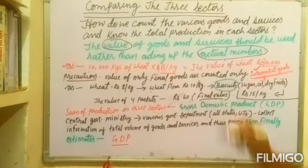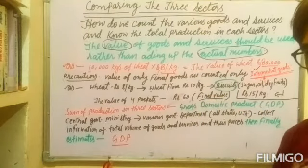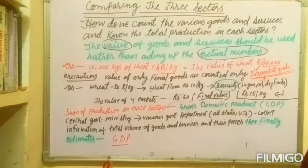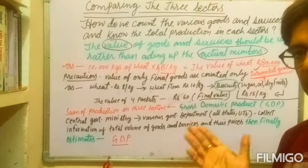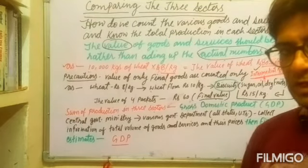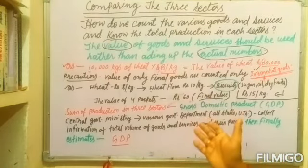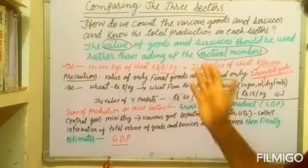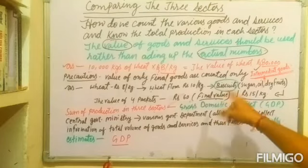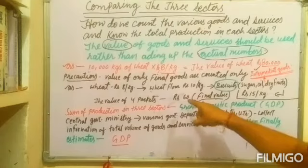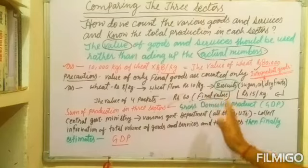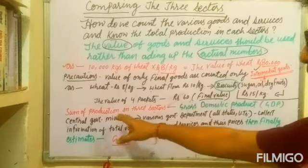Biscuits are the final goods, and the value of a packet of biscuits is 60 rupees — that is the final value. We do not go back to the primary or secondary sector to count their values again, because those values have already been added in. The sugar, dry fruit, oil, milk, wrapper, and other things used to produce the biscuits have already been paid for, so only the value of the biscuits is counted in GDP.